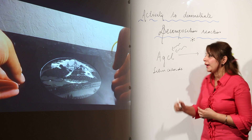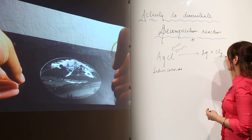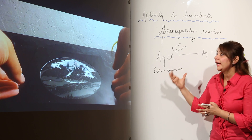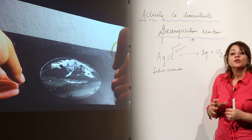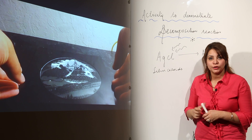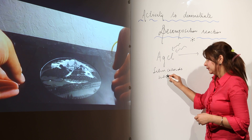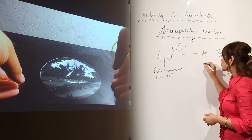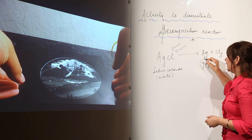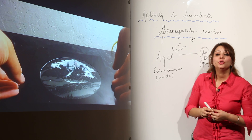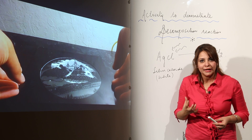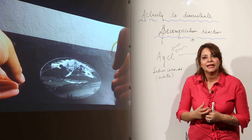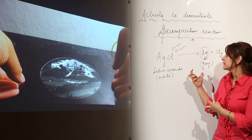When we expose silver chloride to sunlight, we get silver and chlorine separated from each other. Silver chloride is white in color — these crystals are white — but when you expose them to sunlight, with the passage of time they turn gray. This gray color is due to silver, because silver is a metal and metals are generally silvery-gray in color. This color change is due to the photolytic decomposition reaction in the presence of sunlight.